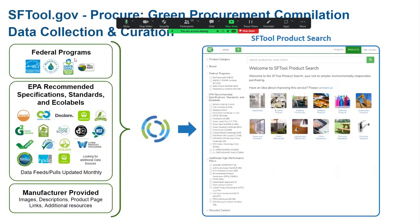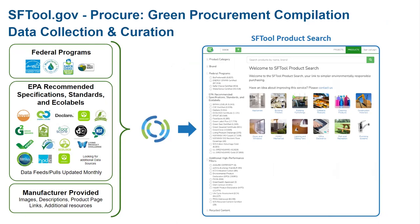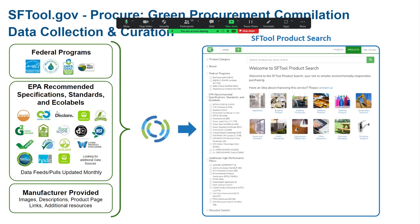What we're doing is taking all the federal program data from Energy Star, WaterSense, Safer Choice, and BioPreferred. All of those are computer data registries, and every time they're updated, we update our site — essentially monthly. The same is true with all the EPA recommended specification standards and eco-labels that come in on those programs, and we pull that all into our system.